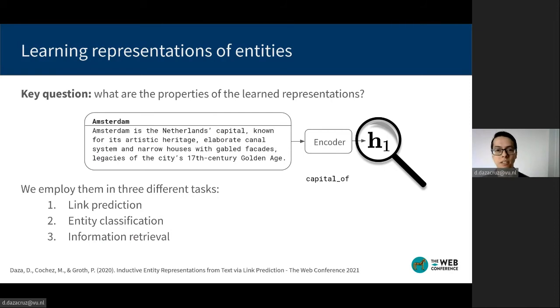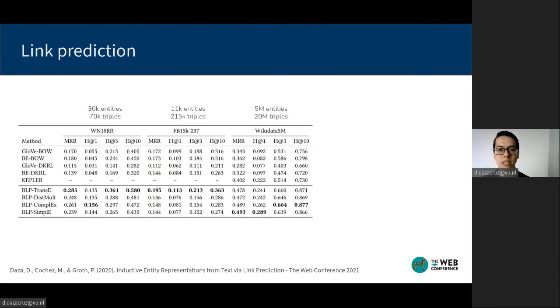Since the encoder can now map entity descriptions to a vector, there could be other applications, probably not even related to the graph, on which it can be useful. So in addition to link prediction, we study the tasks of entity classification and information retrieval.